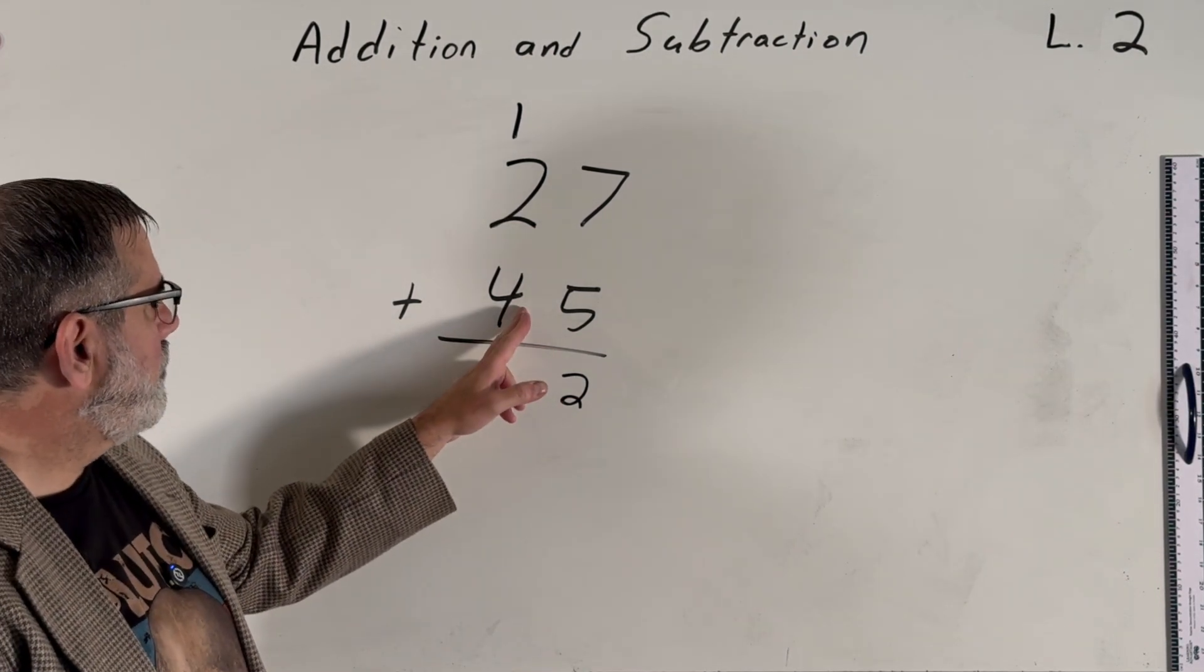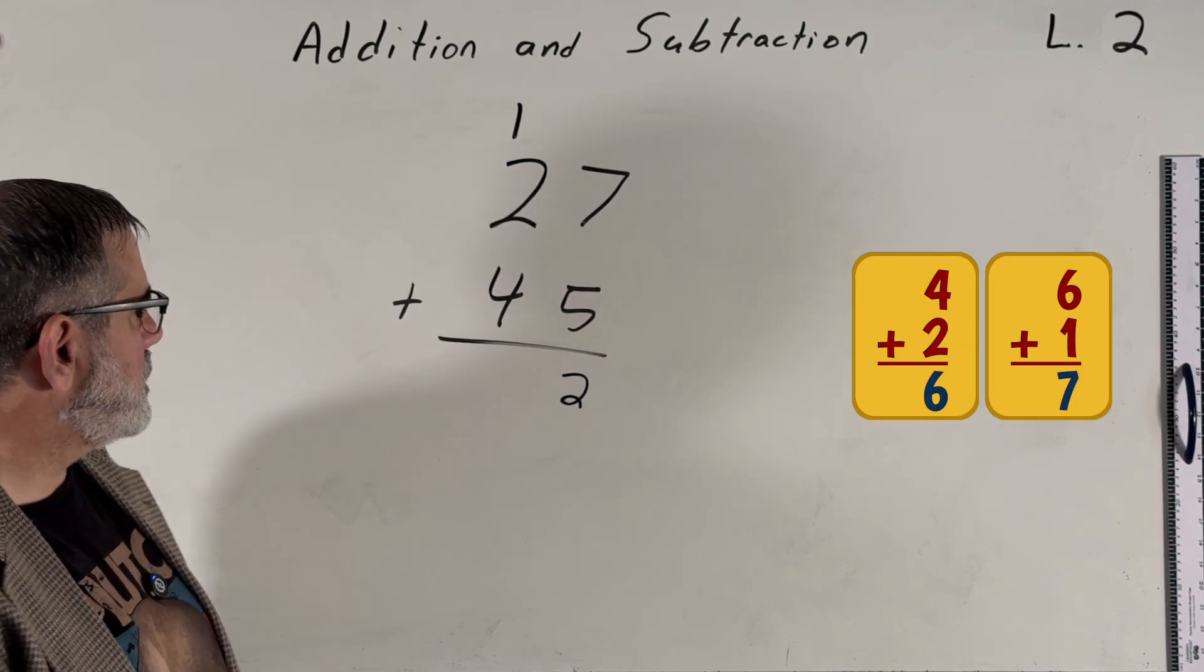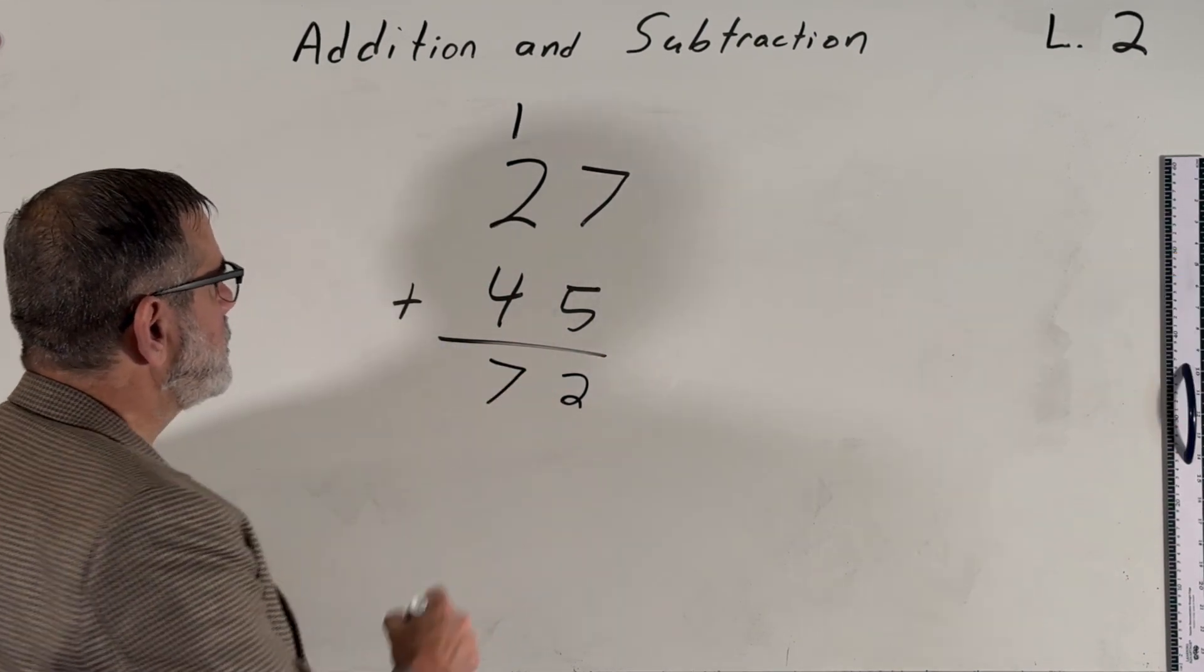Then we move on to the next column, and we add up not two numbers, but three. So we have four plus two, which is six, plus one is seven. Then we have our final answer, 72.